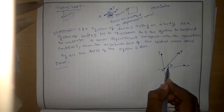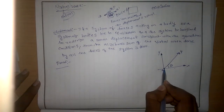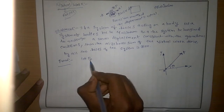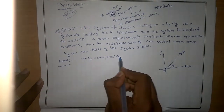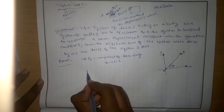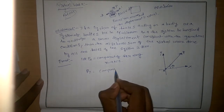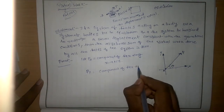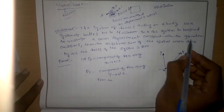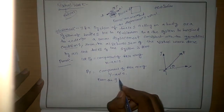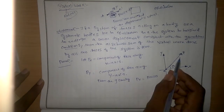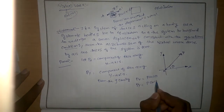A force P is making an angle of theta with the x-axis. Initially the particle is at O and we have applied a force P. Let Px be the component of force along the x-axis and Py be the component of force along the y-axis. From the geometry, P cos theta is along the x-axis: Px = P cos theta. P sin theta is along the y-axis: Py = P sin theta.